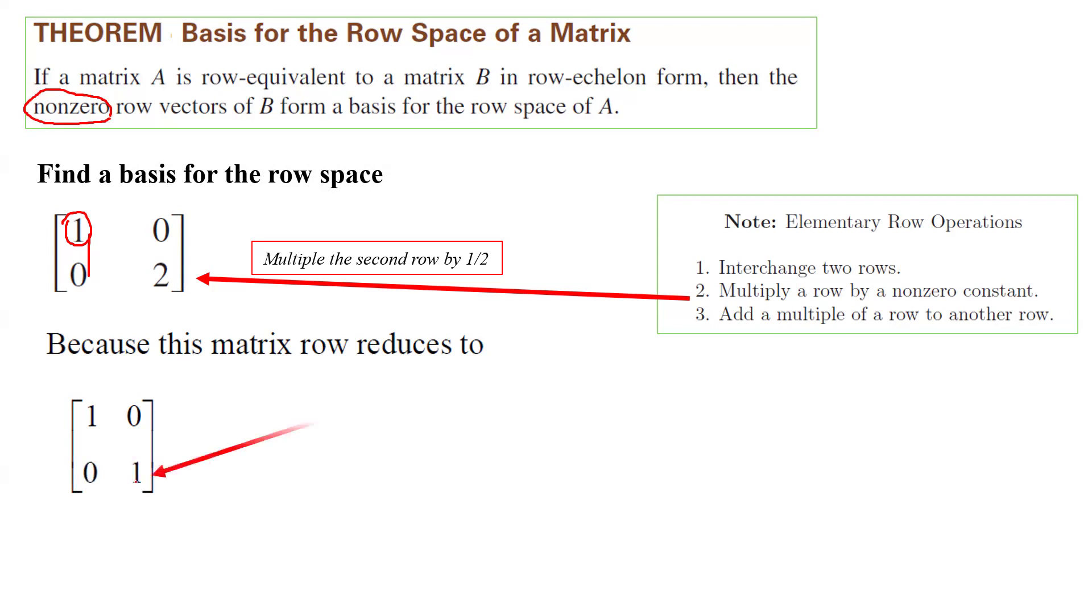And then it becomes 0 and 1. So on the second row, you have pivot 1. So you basically created identity matrix. Now that you have identity matrix, we can talk about the basis for the row space. The row space has bases 1 and 0, which is your very first row, non-zero row. And the second one is vector 0 and 1. That's how you find the basis for the row space.